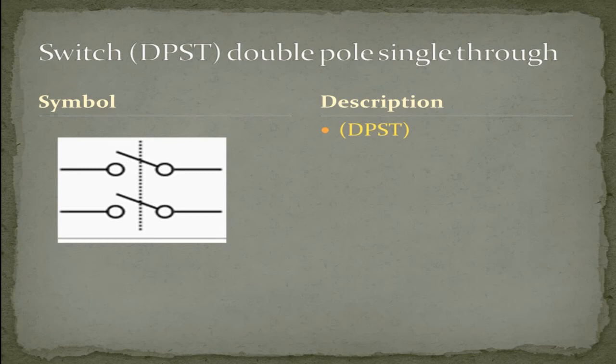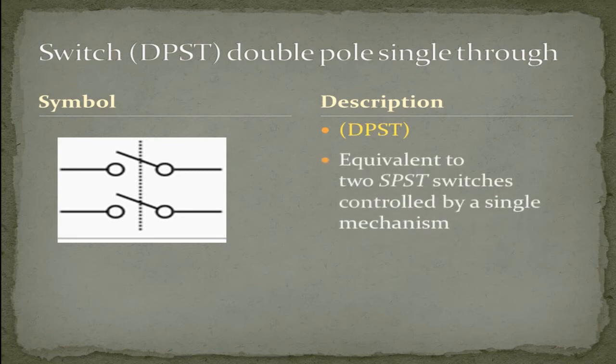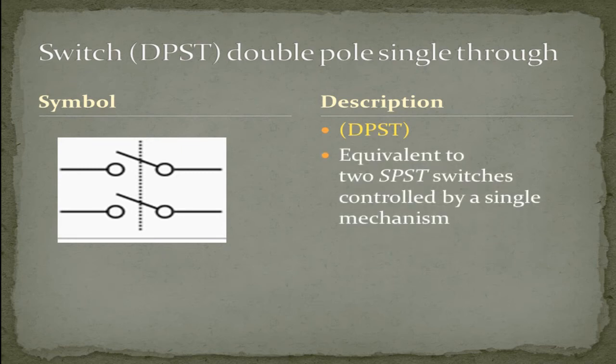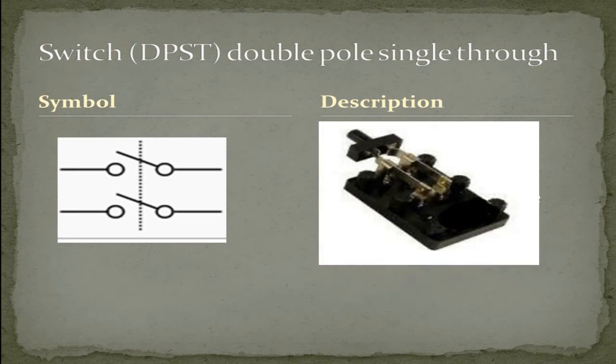Double pole, single throw switch. Equivalent to two single pole, single throw switches controlled by a single mechanism. As you can tell from this picture, you have two commons and two lines. They are either open or closed.